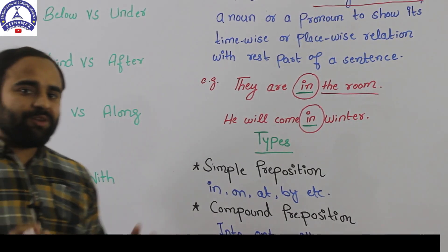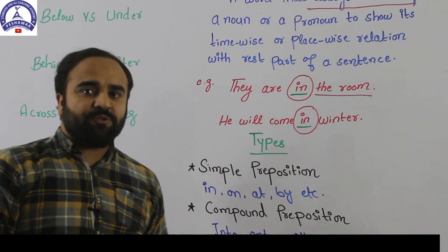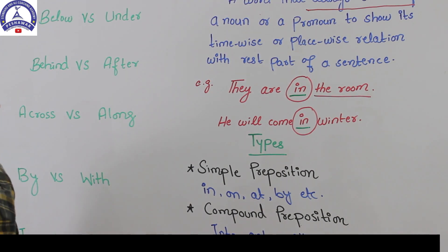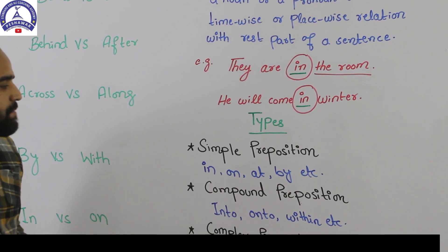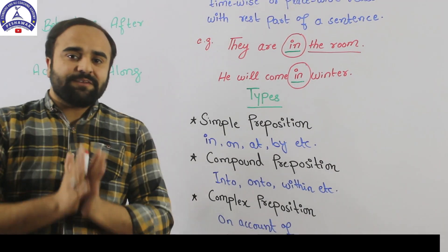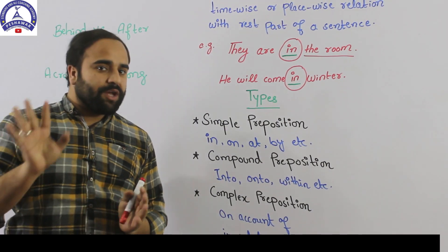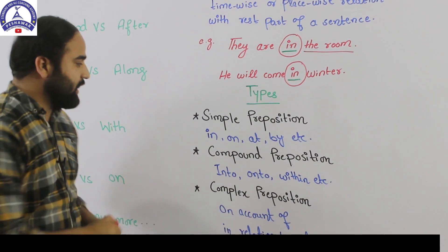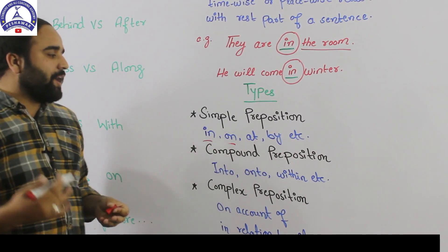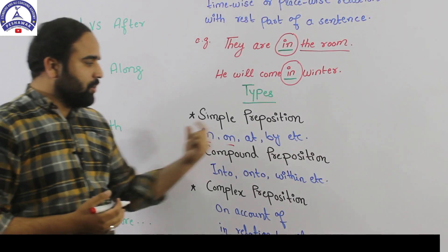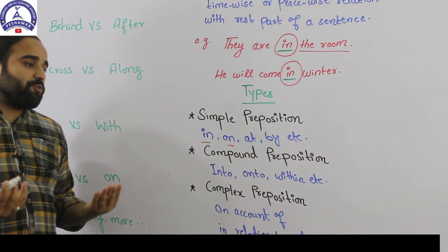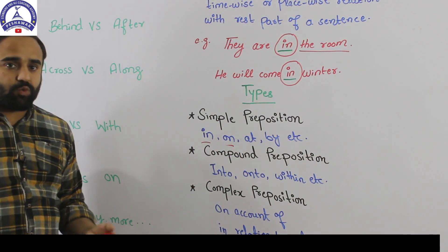When we talk about the types of preposition, we've got three major types. Simple preposition is a preposition that is made of only one word, like in, on, at, by, with, up — all these are simple prepositions.